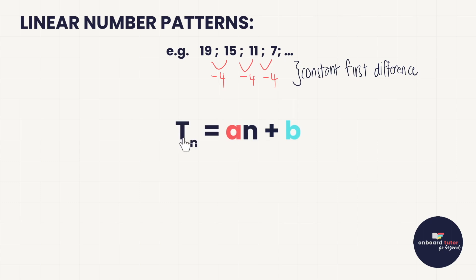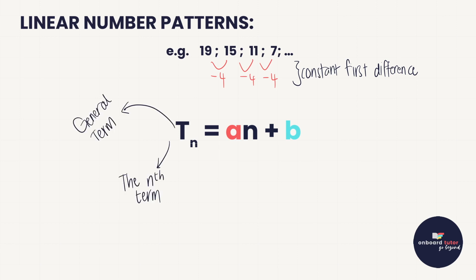The general term for a linear number pattern is Tn = An + B, where Tn can be referred to as the general term or the nth term. The A value is the first difference — so for the sequence above, A equals negative 4. The B value can be worked out using term 1 minus the constant difference. These are the types of number patterns we learned about in grade 10.